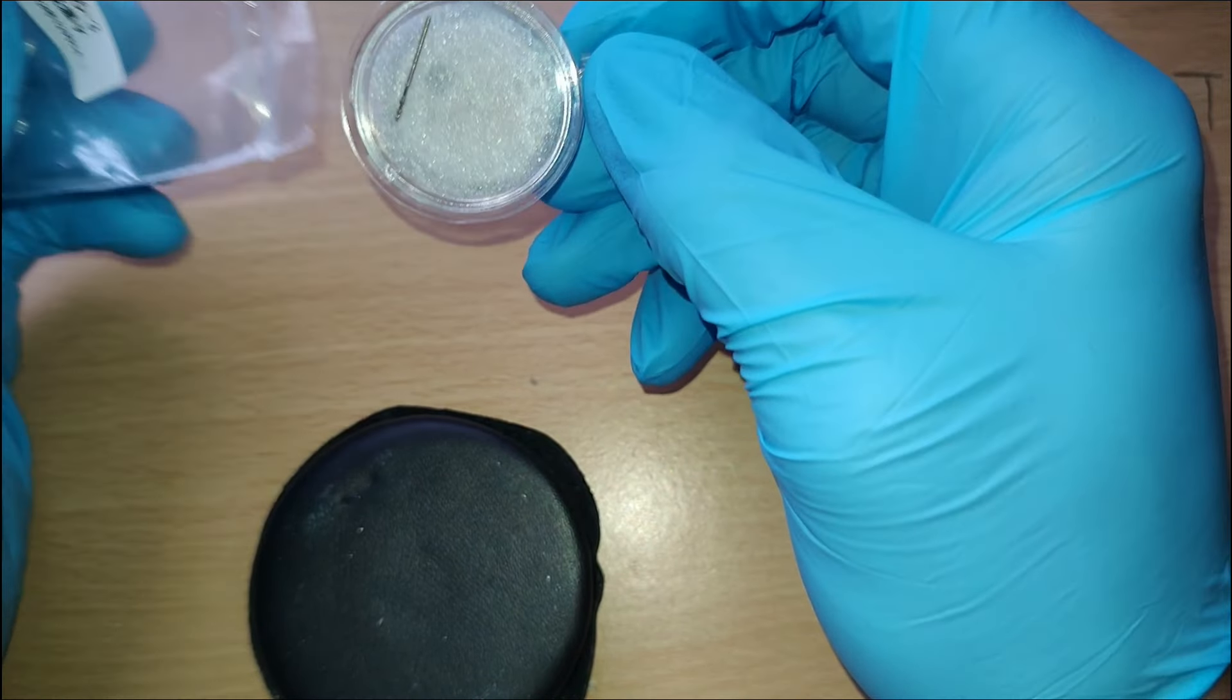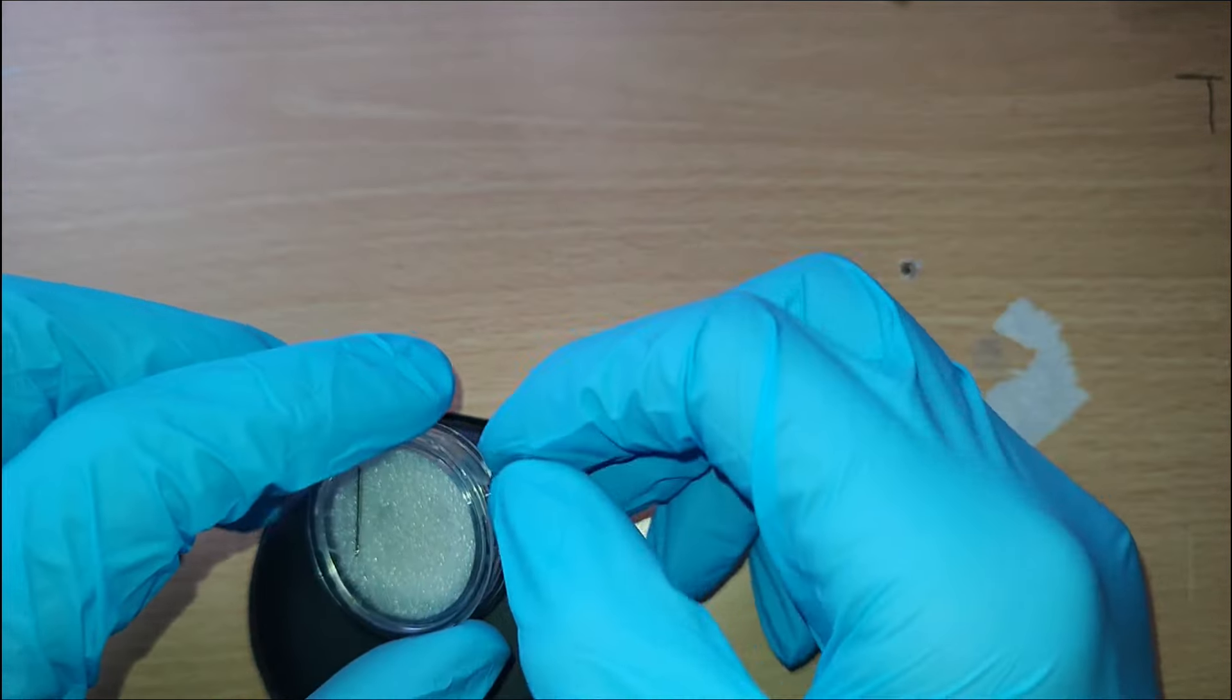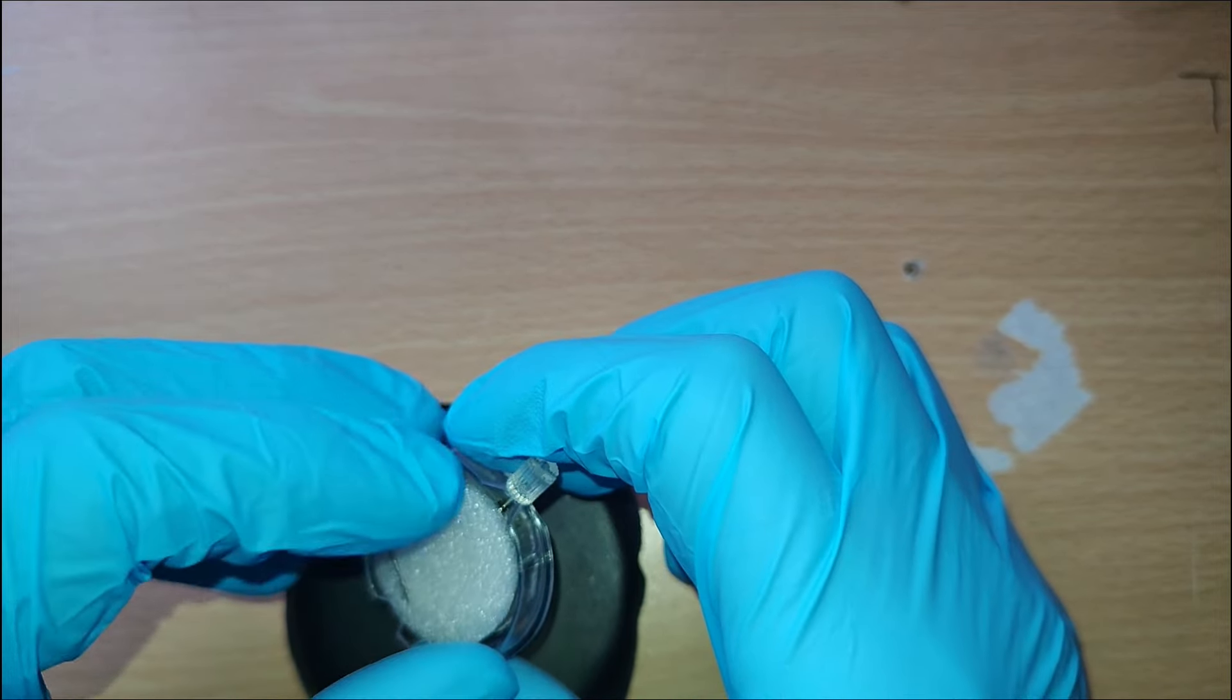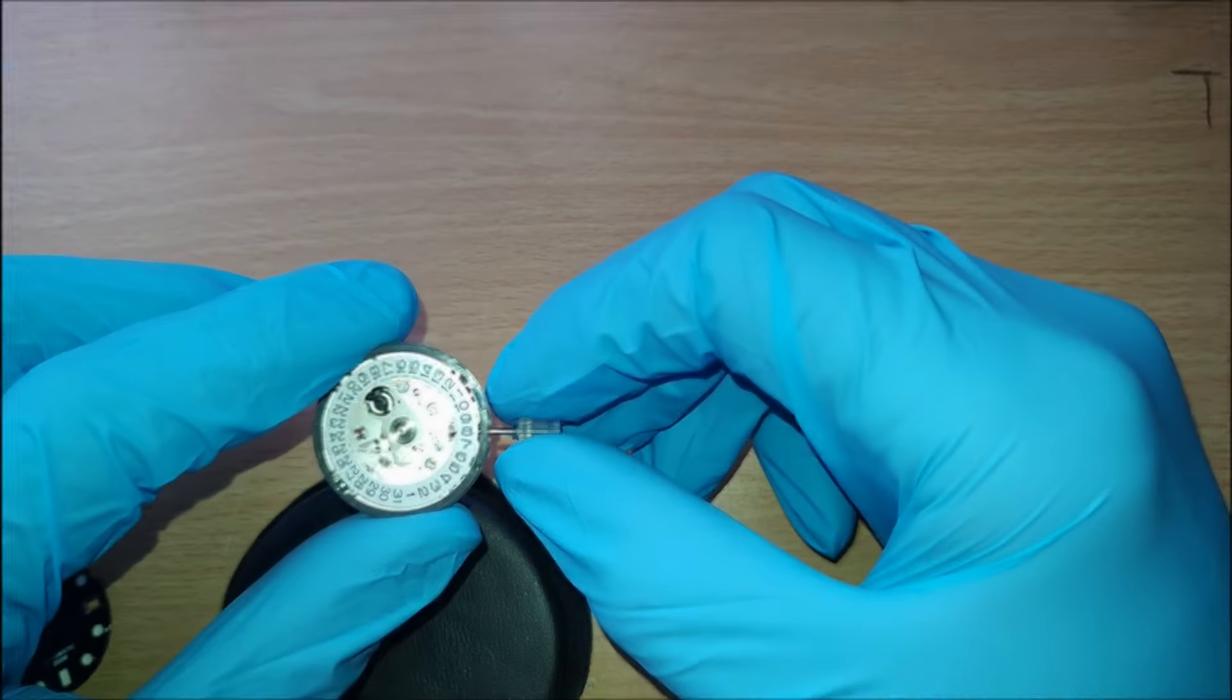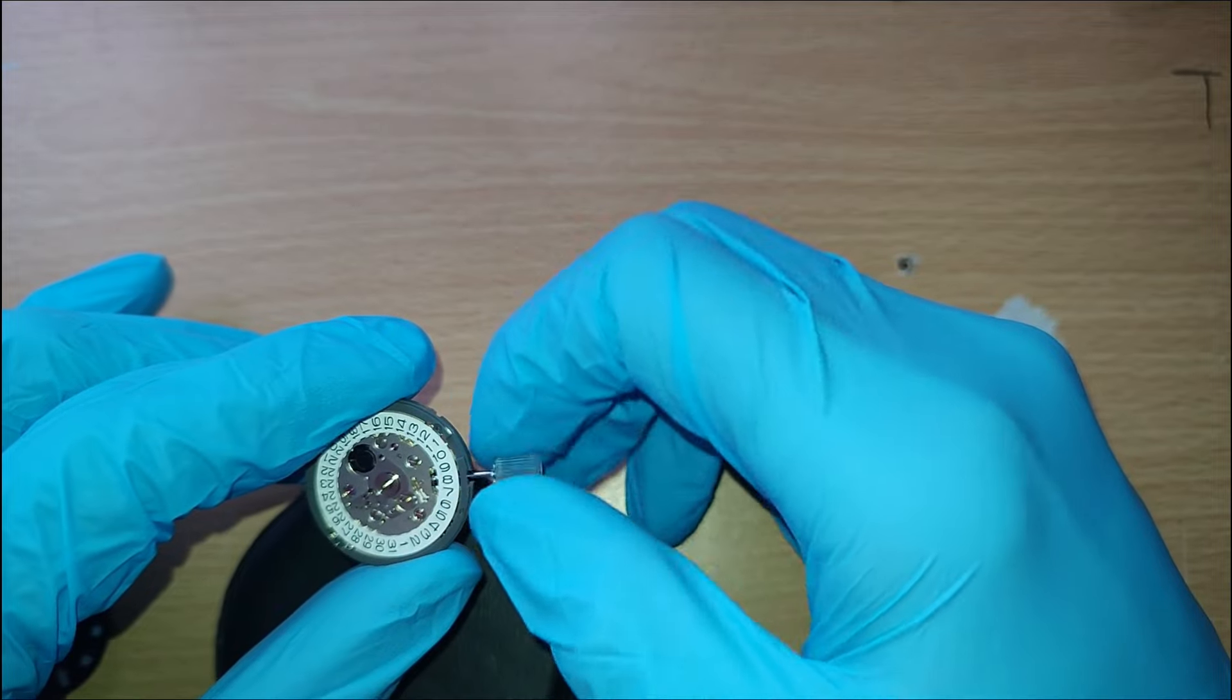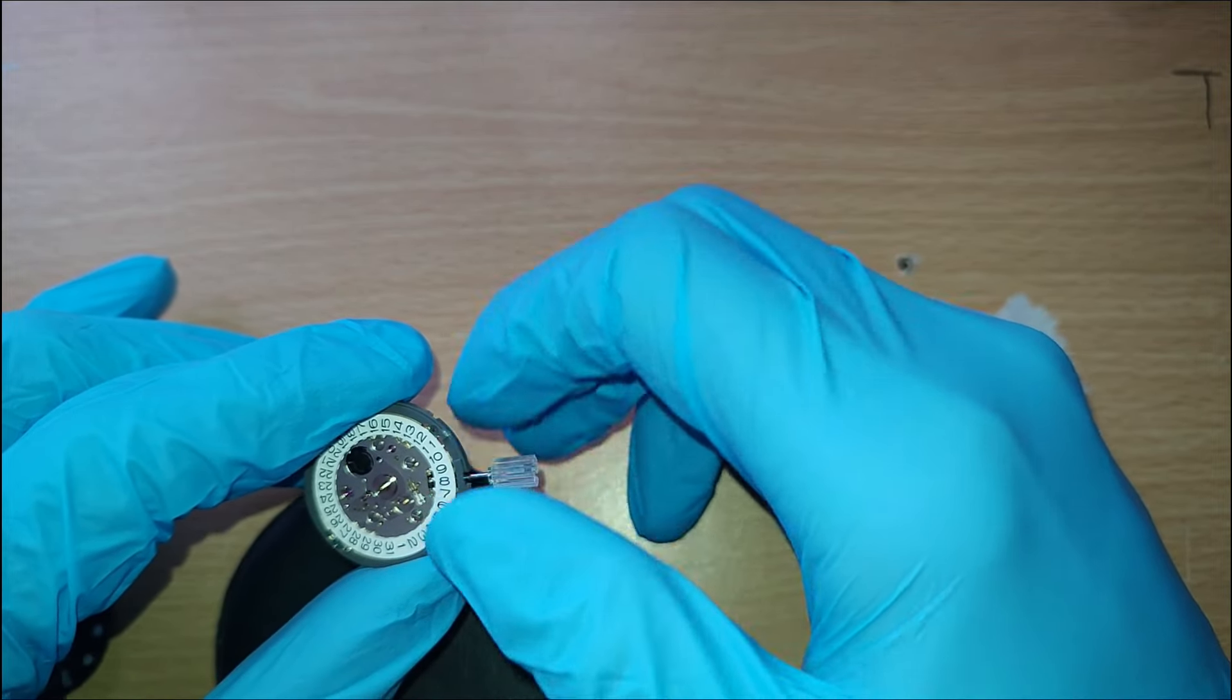The first thing we've got to do is unwrap the movement. This is going to have an NH35 in it, which we all know very well. The first thing I'll do is quickly check it, make sure it winds around properly and make sure it's not in between dates before I start working on the movement.